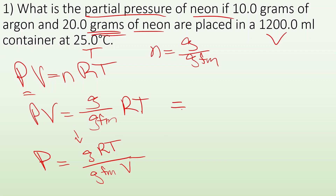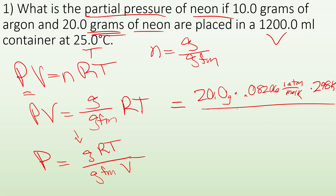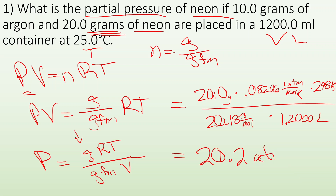Now I do my math — plug and chug. My grams is 20.0. I'll use atmospheres, so R = 0.08206 L·atm/mol·K. Temperature at 25°C is 298 K — has to be in Kelvin. GFM of neon is 20.18 g/mol. Volume is 1200 milliliters, which converts to 1.2000 liters. I end up with 20.2 atmospheres. The fact that there's another gas in there is not relevant to solving for the partial pressure of just one gas — you can ignore the others.